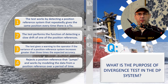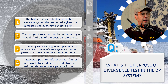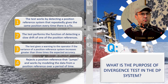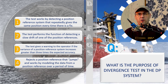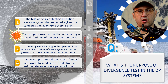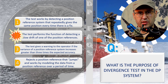Think about that please. Your turn. Yes, you're right — Variant 2 is the correct answer. The test performs the function of detecting a slow drift of one of the position references.